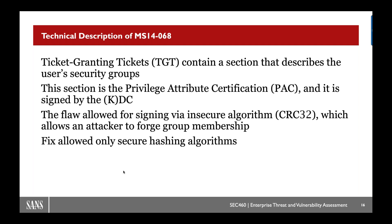How does it work? The way a Kerberos ticket identifies what you should have access to is based off of the Privilege Attribute Certificate. This tells what security groups the user is in — things like domain administrators. It's signed by the KDC, but if that KDC is vulnerable to MS14-068, it may accept insecure algorithms like CRC32. This allows us to modify our legitimate TGT to become any other domain user, including the domain administrator. Really very dangerous.